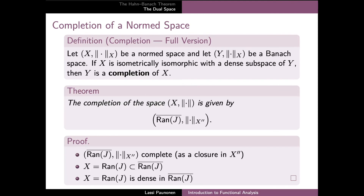To see that this space is indeed a completion of X, we note that it is a Banach space because it is a closed subspace of the second dual, which is a Banach space. Moreover, X is isometrically isomorphic to the range of J as already established, and the range of J is a subspace of its closure. Finally, by definition of closure, the range of J is dense in the closure, confirming that the closure of the range of J is a completion of X.